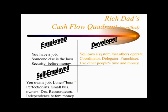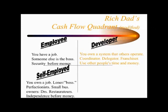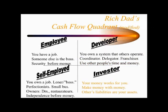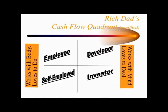The developer quadrant means you own a system that others operate. You coordinate and delegate — a franchise is a good example, as is network marketing. You use other people's time and money to create your wealth. The investor quadrant takes this further: your money works for you, you make money with money, and others' liabilities become your assets. On the left hand side, people work with their body and love to do; on the right hand side, people work with their mind and love to deal.